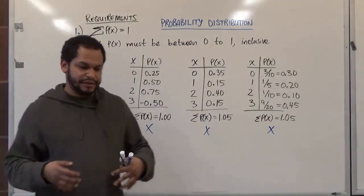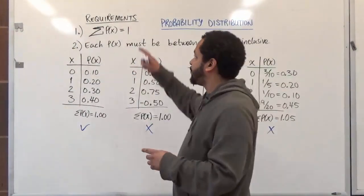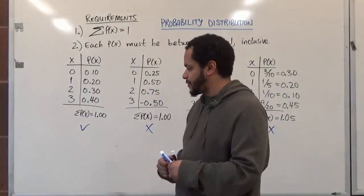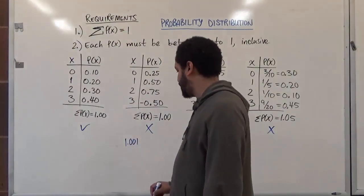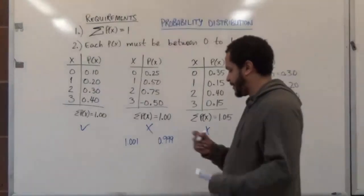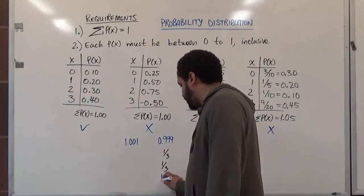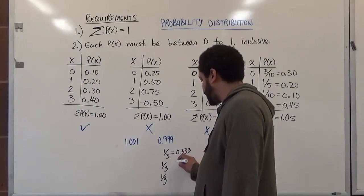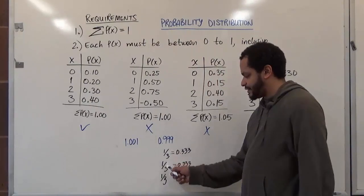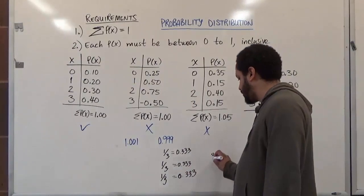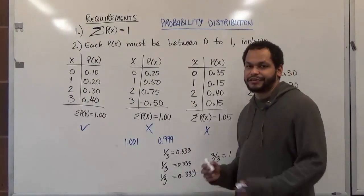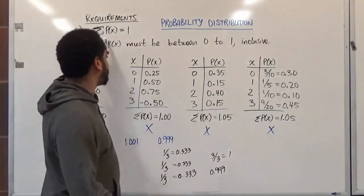For those watching who need a bit more detail: there are two special cases where the sum of probabilities is slightly greater or less than 1 — specifically 1.001 or 0.999. This happens when converting fractions like 1/3 + 1/3 + 1/3 to decimals gives 0.33 + 0.33 + 0.33 = 0.999, but the true fraction sum is 3/3 = 1. Keep that in mind when checking the sum of probabilities.